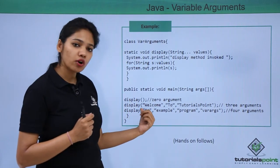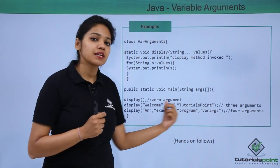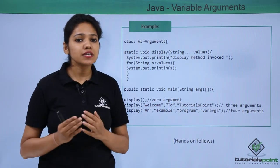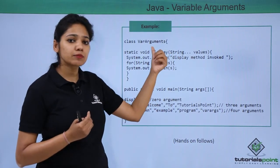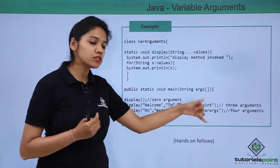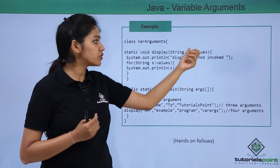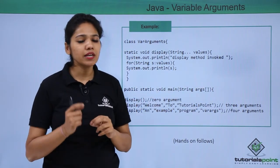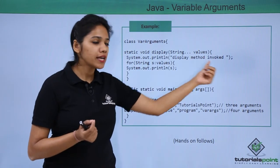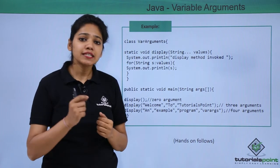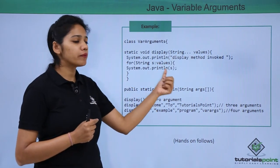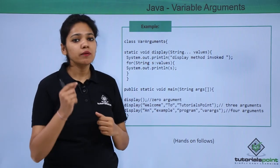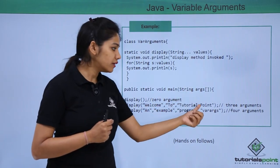In the second case, we call the display method with three arguments: 'welcome', 'to', and 'tutorials point'. Again the display method executes — all these arguments are stored in the values array. It first prints 'display method invoked', then goes to the enhanced for-loop, which iterates and prints each argument one by one: welcome, then to, then tutorials point.